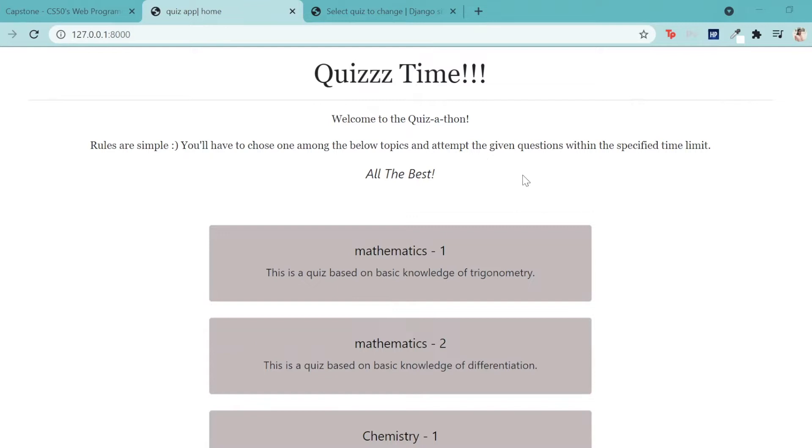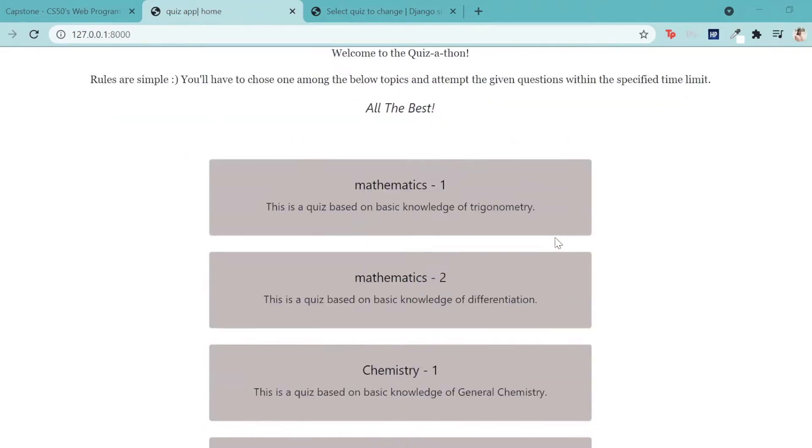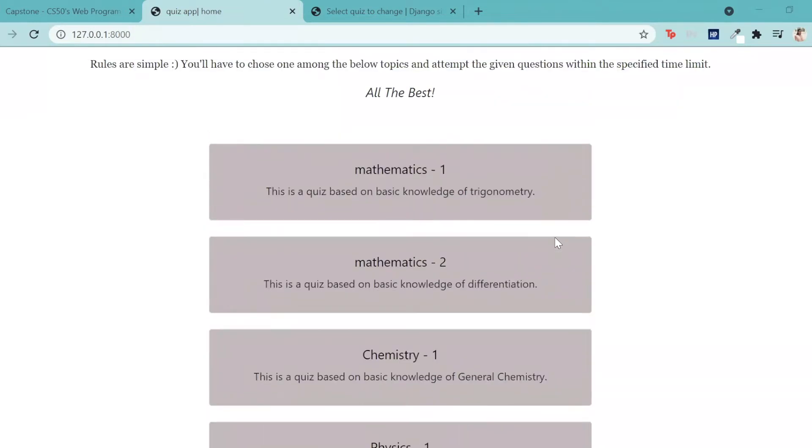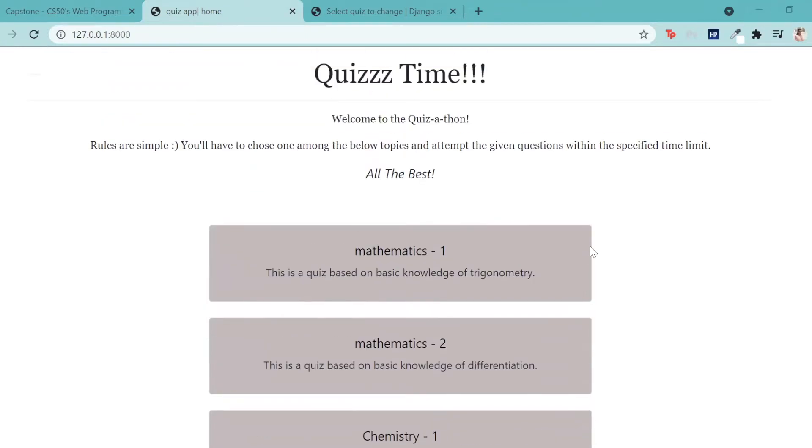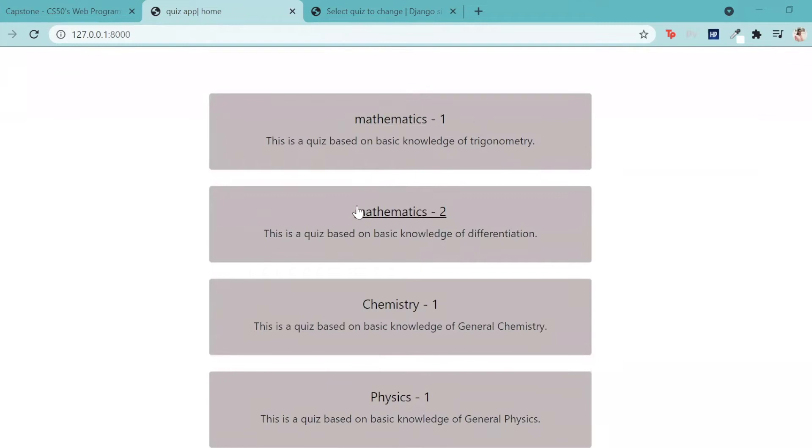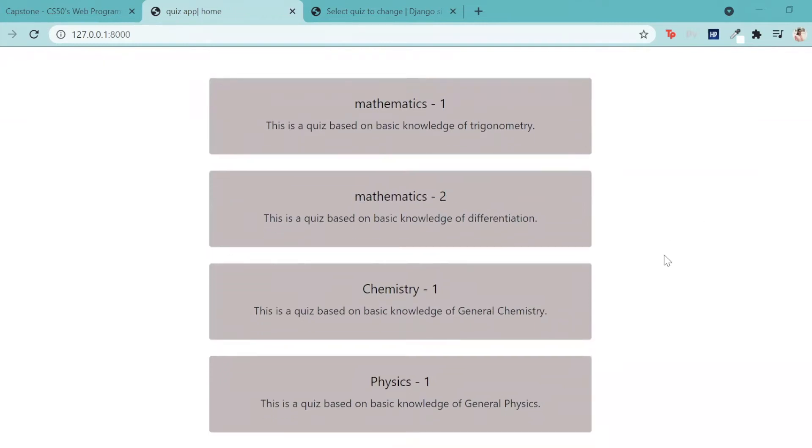First specification is home page. As you can see, this is my main home page consisting of the instructions for the quiz along with a list of topics for the user to choose from. There is a small description given along with the link to take any one of the quizzes on a particular topic. I have included topics like Mathematics 1, Mathematics 2, Chemistry 1 and Physics 1.